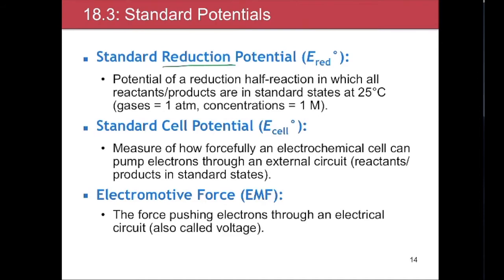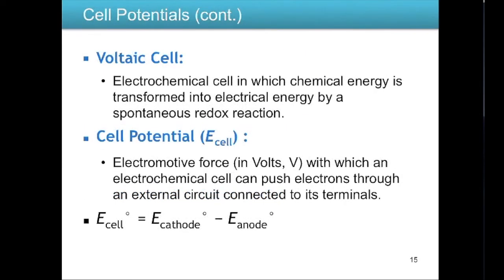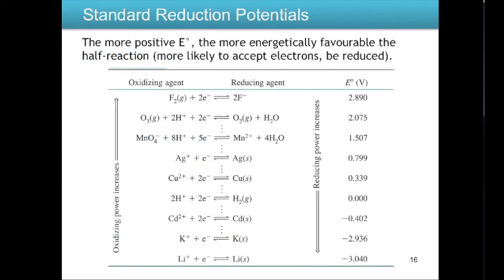Electromotive force is another word for potential or voltage — it's the force pushing electrons through the circuit. To find the cell potential, take the standard reduction potential of the cathode minus the standard reduction potential of the anode. For a voltaic cell (spontaneous), the cell potential E°cell must always be positive. If you get a negative number, you've set it up backwards.